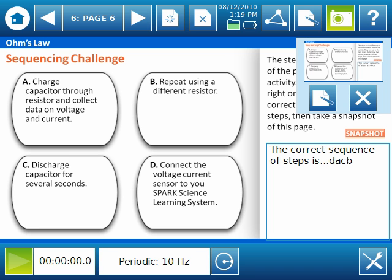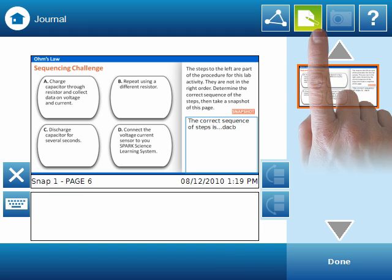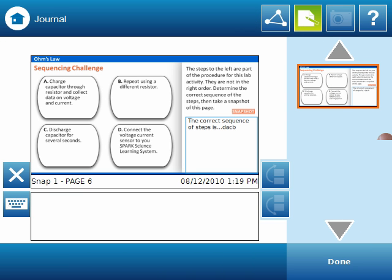To view the journal at any time, you can select the journal button at the top of the screen. In the journal, you should see all the pages that have been snapshot in the order that they were taken. Here we have only one page so far, but as more pages are entered into the journal, we may find it necessary to make notes under some of the pages.